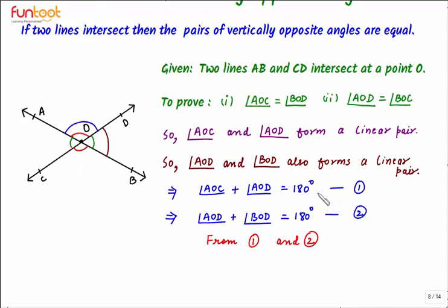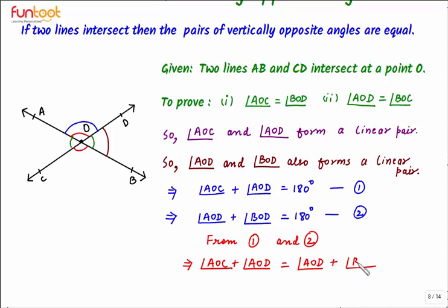From equations 1 and 2, the right-hand sides are equal, so the left-hand sides will also be equal. This implies: angle AOC + angle AOD = angle AOD + angle BOD. Now angle AOD is common on both sides, so we can cancel it. This gives us angle AOC = angle BOD, which is the first part of our theorem.